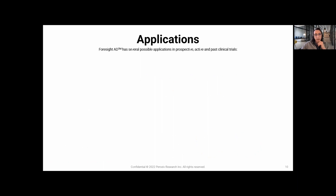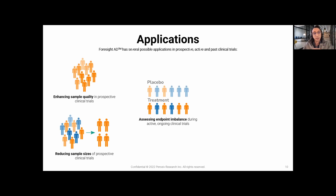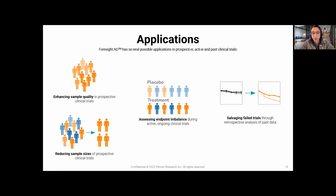You can do multiple things with this information. First, increase the quality of the population selected — increasing the power of your study to detect smaller effects. Second, with a higher-quality population you can reduce sample size while achieving the same power. Third, you can intervene during a clinical trial, assessing imbalance between treatment and placebo arms in terms of stability versus likely decliners, and bake that into your final statistical analysis. Finally, you can use it to re-stratify failed clinical trials, identifying a subpopulation at higher risk to show steeper drug effects.